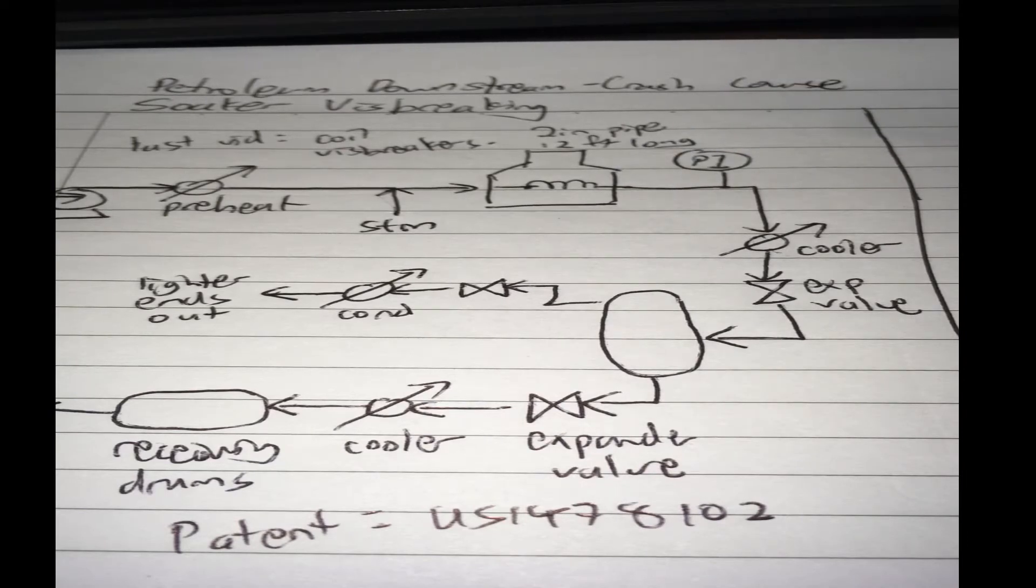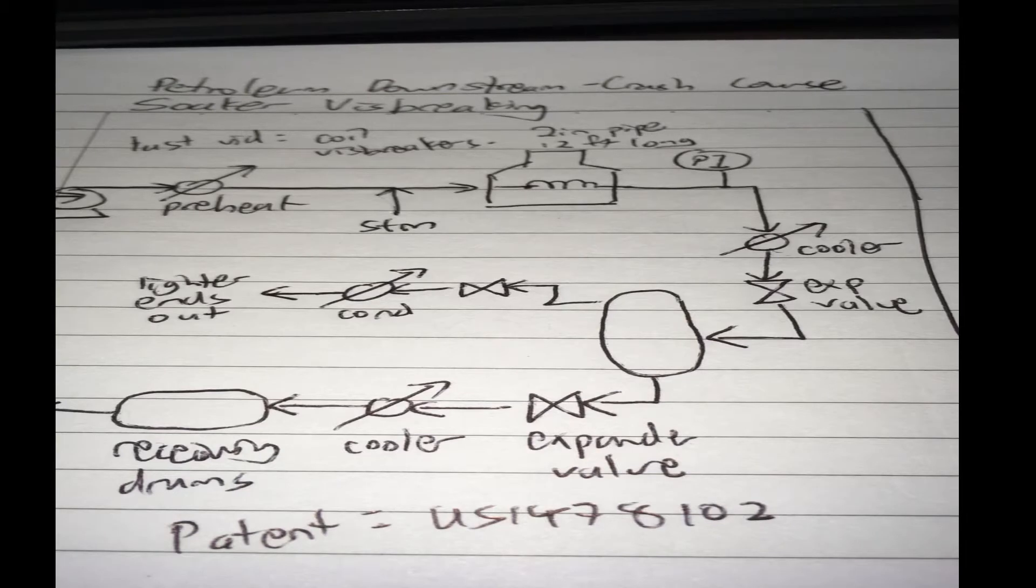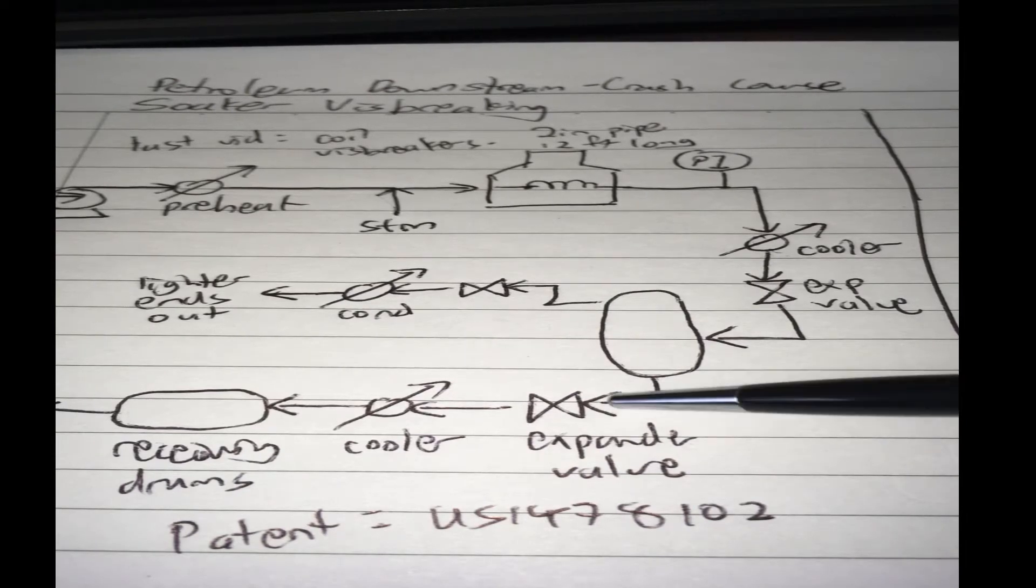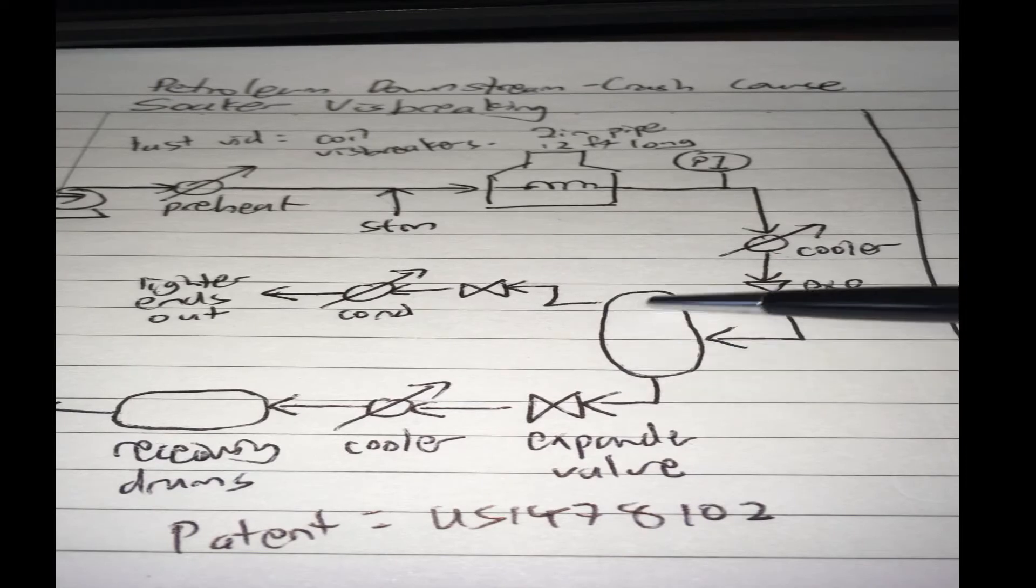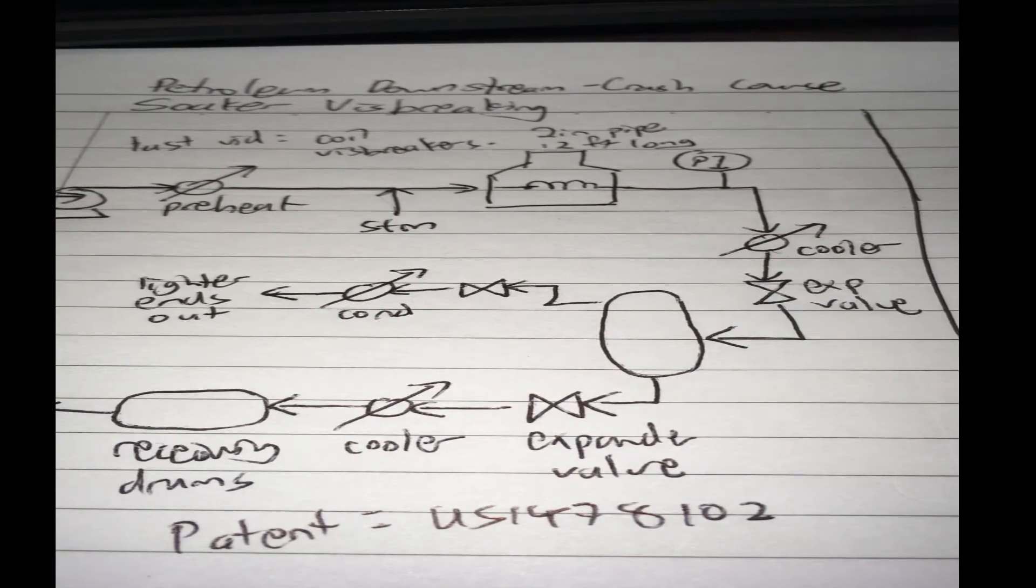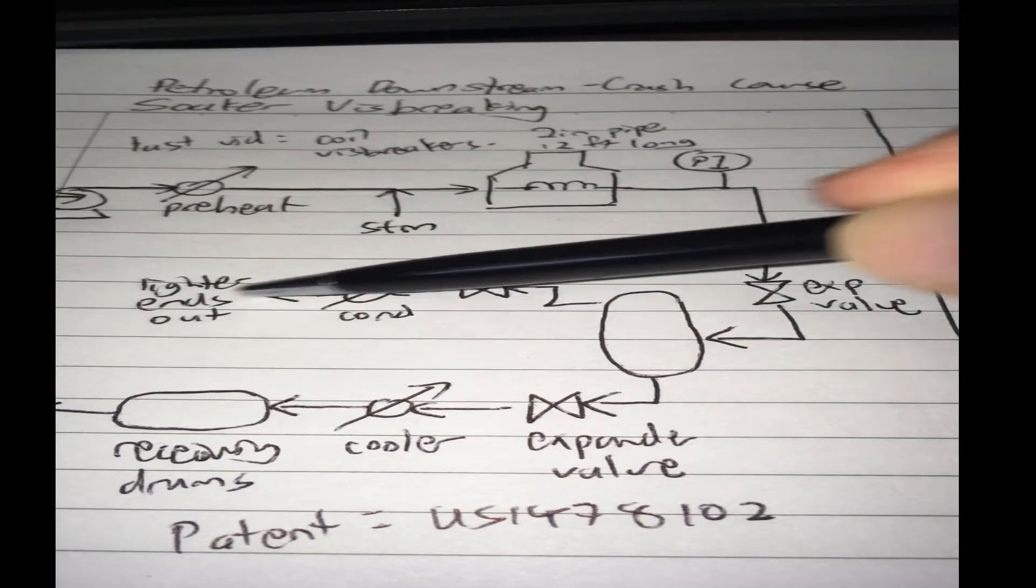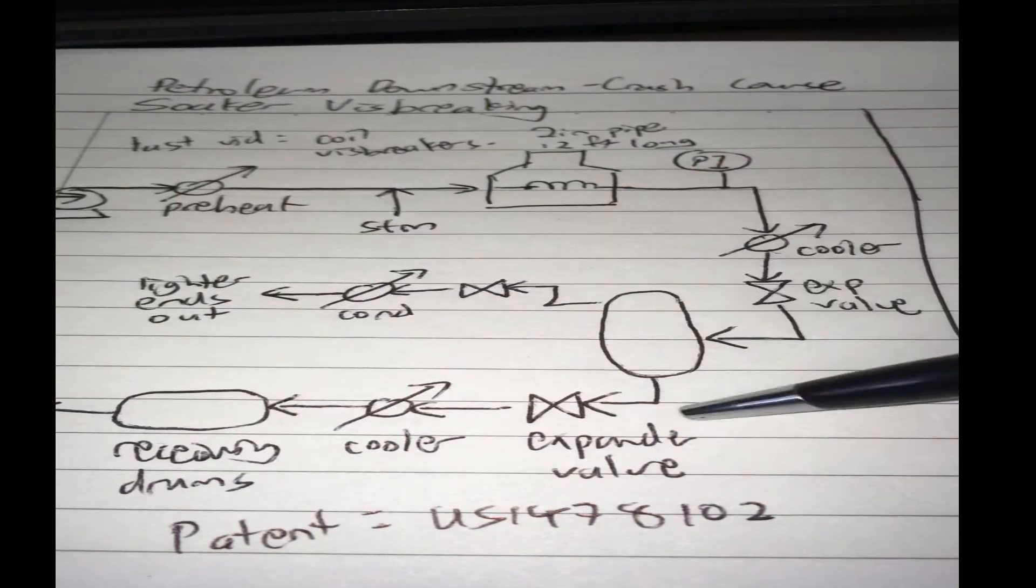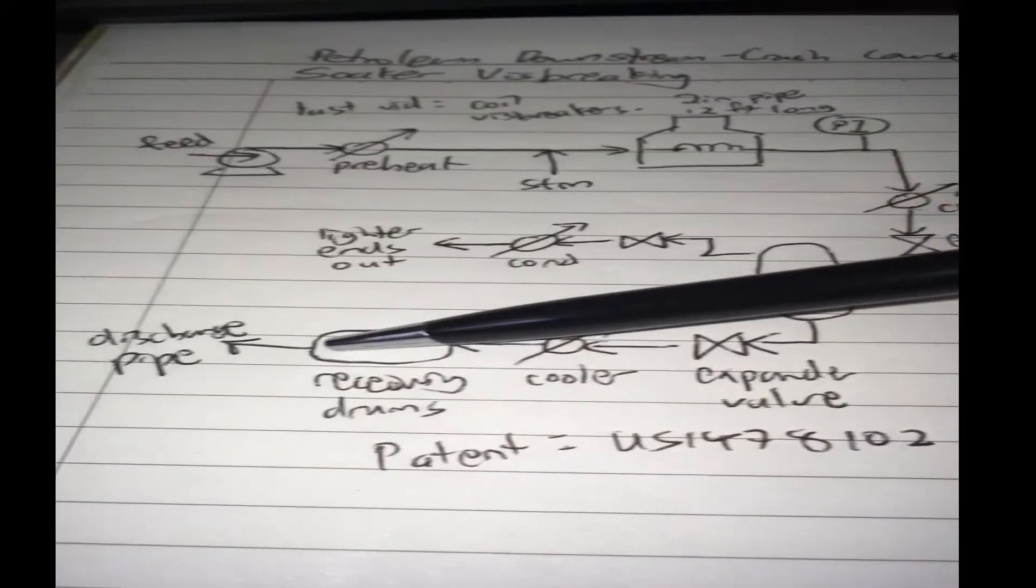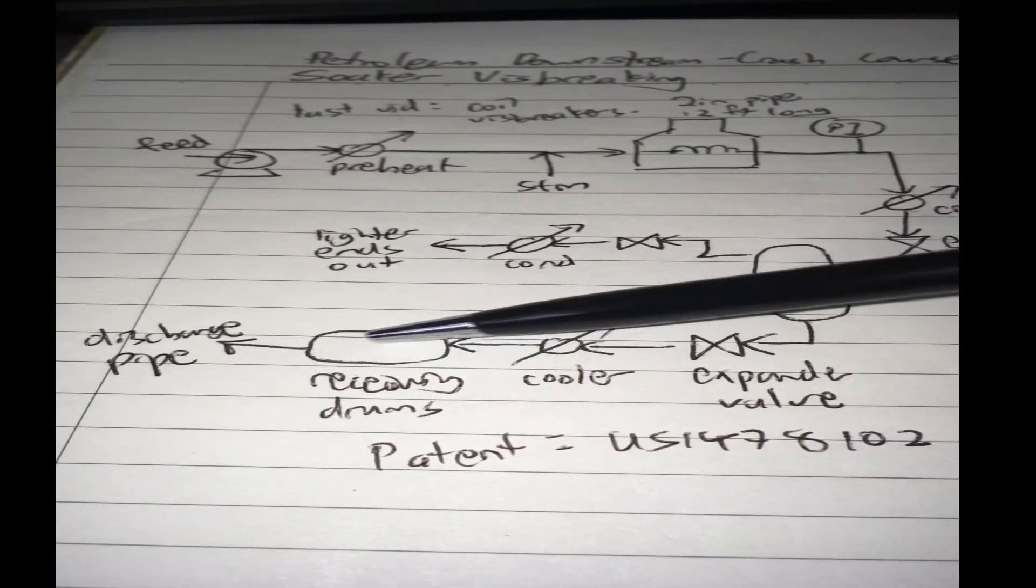We can also have it in a distillation column. The idea is you must separate out your products into various streams before you can further process them. At the top you have the lighter ends out, at the bottom the heavier ends, and sometimes you put it in a storage drum.